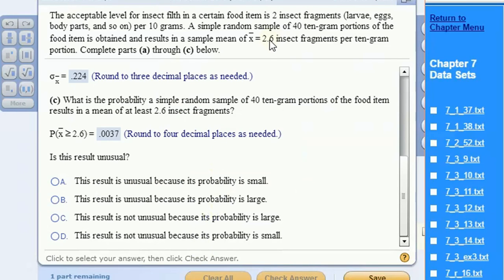So if we actually got 2.6, that is an extremely unlikely scenario assuming that the mean was 2. This result is very unusual because this probability is quite small. When we go into hypothesis testing, we would call this a p-value.